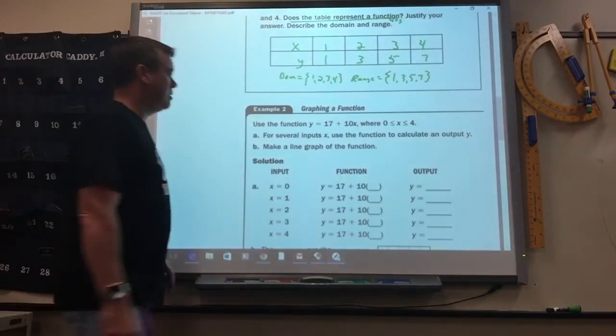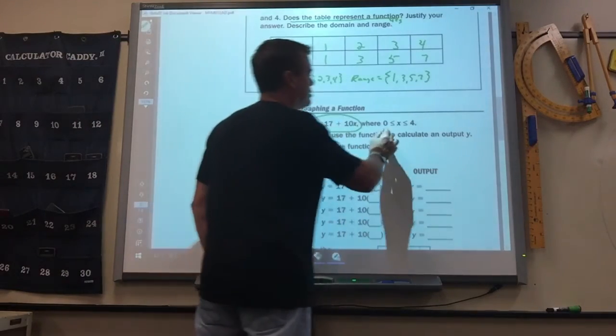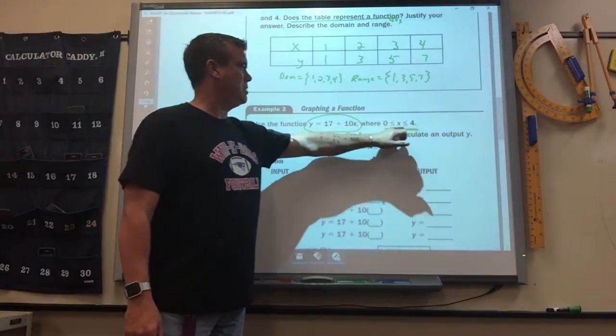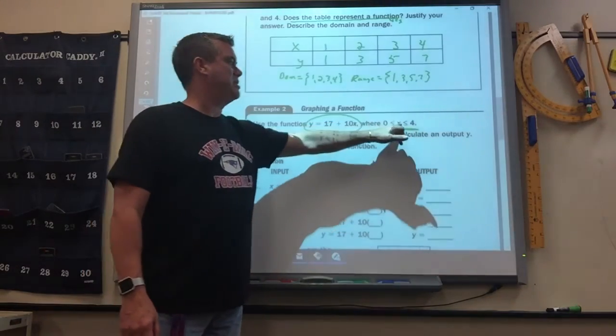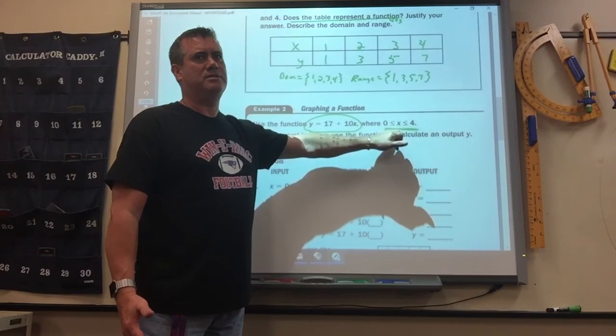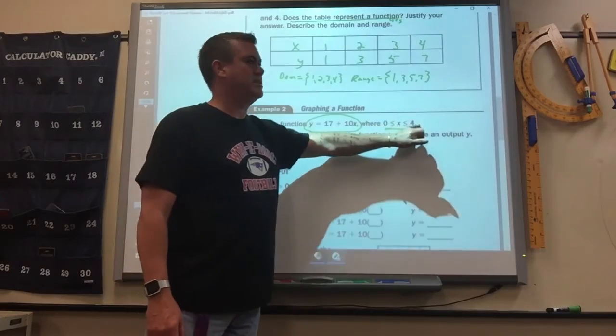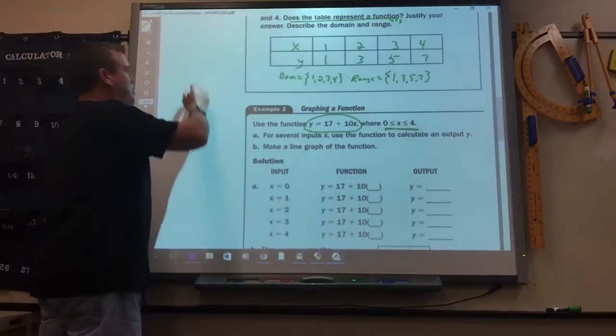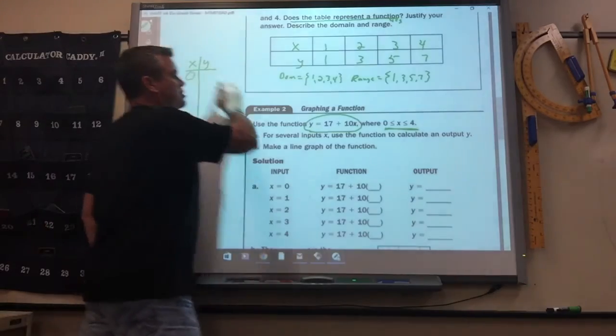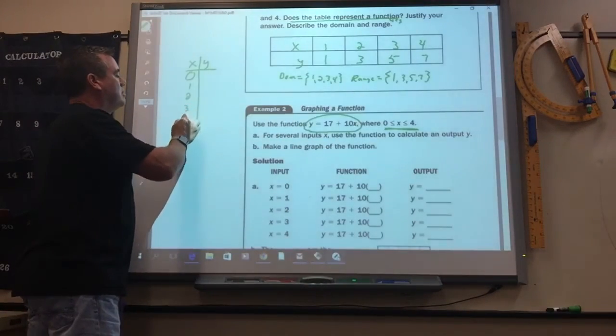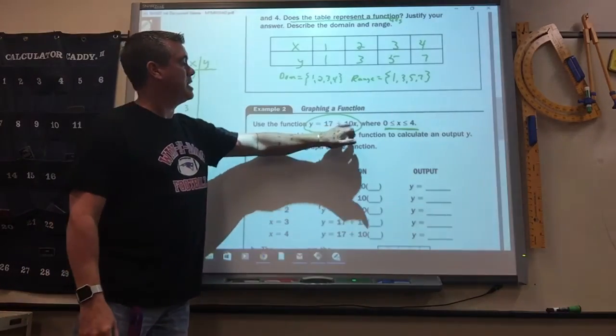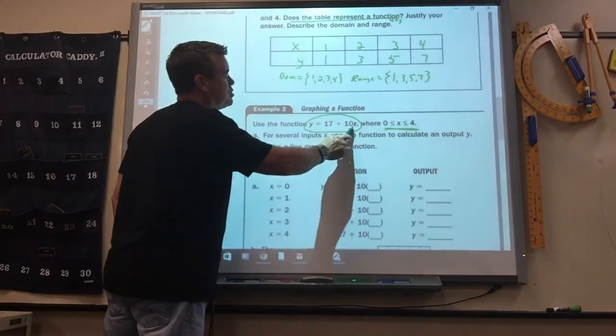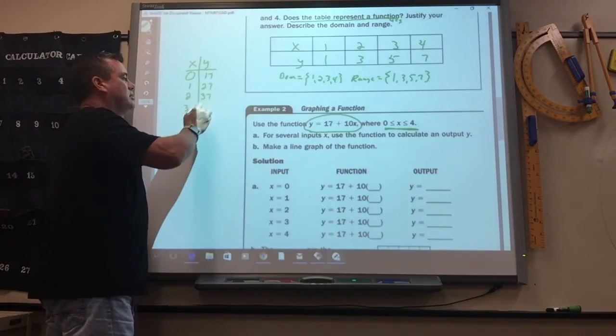Okay. Now this one, use this function. It has a constraint on it. Where zero is less than or equal to x is less than or equal to four. Do you know what this means right here? Remember, what does the x stand for? What word is the x? Domain. So when you see this, it tells you something about the domain. Between zero and four. So when you do this one, you start at zero because it's equal to, and you go up to four. So if I plug zero in here, 17 plus 10 times zero is 17. 17 plus 10 times one is 27. 17 plus 10 times two is 37. See the pattern? 47, 57.